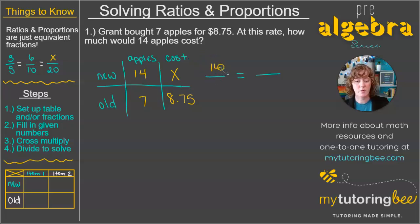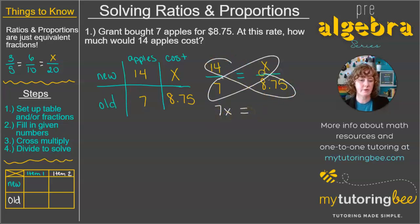So right there, we've got 14 over 7, x over 8.75. So let's go ahead with our cross multiplication. We're going to multiply 7 times x. That's just going to give us 7x. And that equals whatever 14 times 8.75 is. So let's figure out what that is real quick.